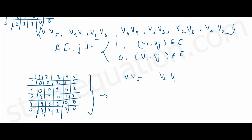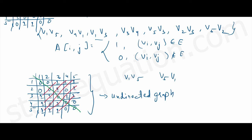This adjacency matrix for an undirected graph looks like a symmetric matrix. The diagonal is all zeros, and each element has a reflection across the diagonal. This symmetry exists because in an undirected graph, V1→V5 is the same as V5→V1, so the matrix is always symmetric for undirected graphs.